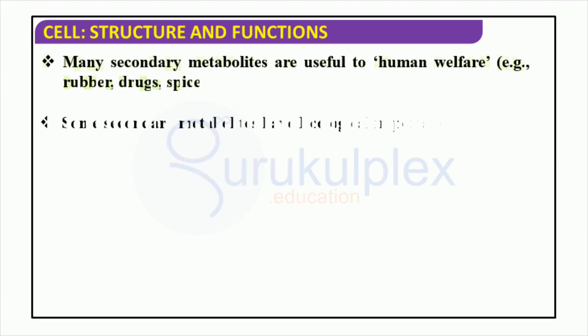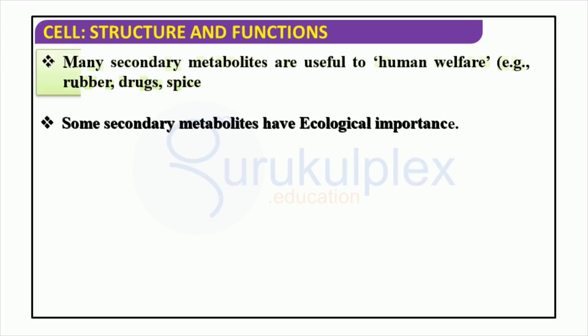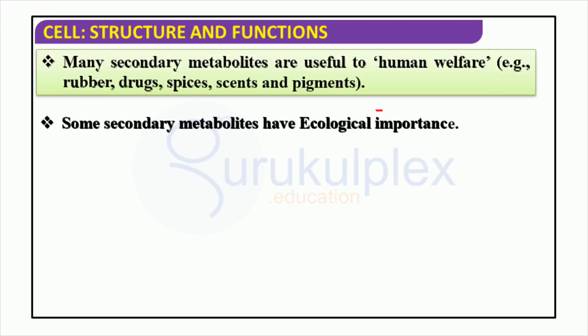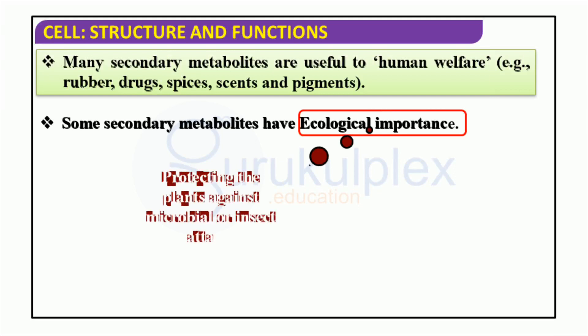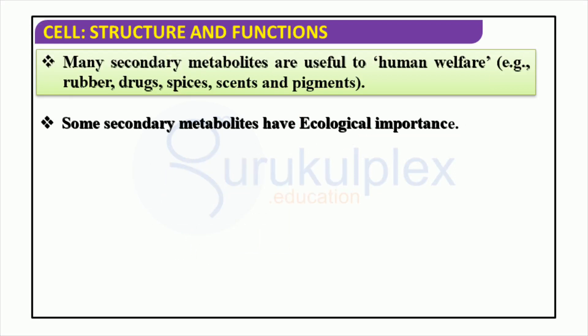Secondary metabolites are highly beneficial and of immense significance for human welfare. They include rubber, drugs, spices, scents, and pigments, and aid plants in defending against microbial or insect attack. Understanding the importance of secondary metabolites and acknowledging their effects on our lives is essential.